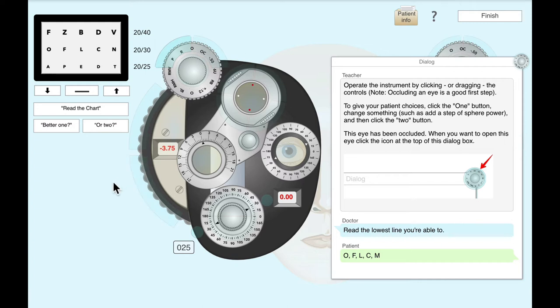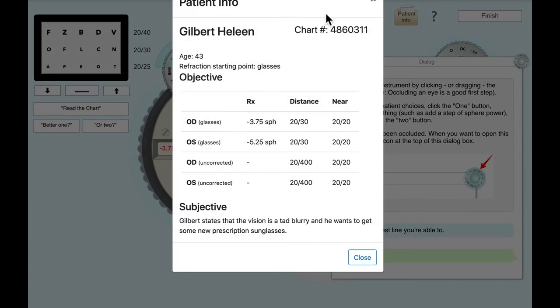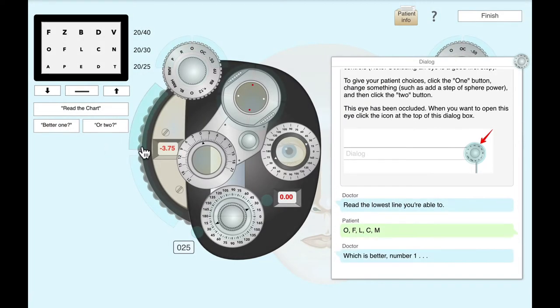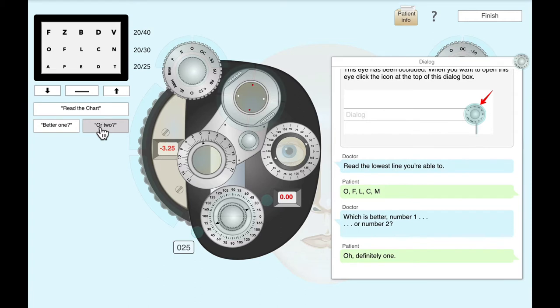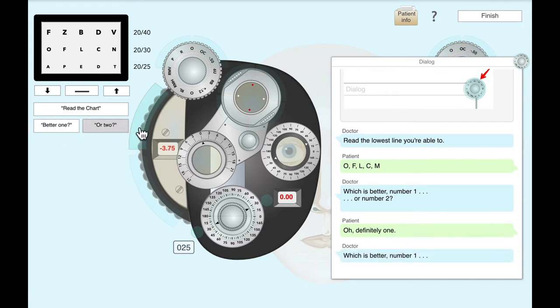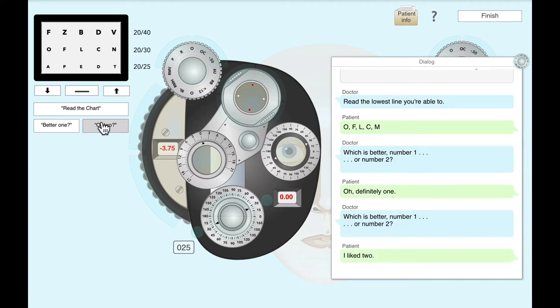I don't want to over minus him, especially at this part of his life. So let's see what happens if we take away some minus. I'm going to say, hey Gilbert, which one's better? Do you like choice one where it is now? Or do you like choice two? Oh, definitely one. So he didn't like that minus being taken away. Let's give him a little bit back and ask again, which one's better? One or two. Or two. There we go. I like two. Okay. So we're back where we started. So we try to take away some minus. It didn't go so well, so we can't get away with that. I have a feeling he's going to like a little bit of minus.